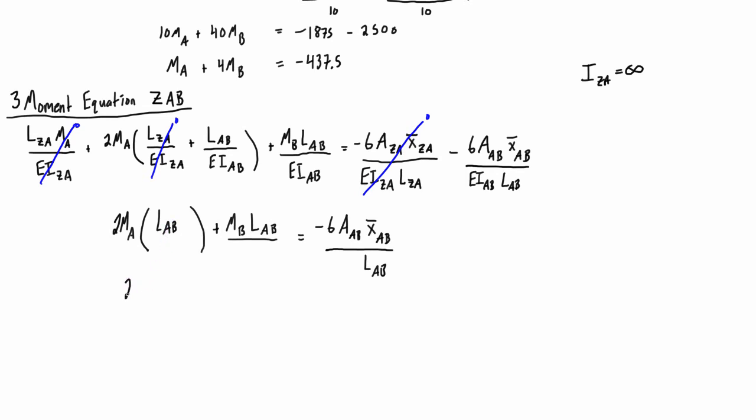So what we can do is we can just fill this in: 2MA times LAB—that was 10—so this is 2MA times 10, plus MB*LAB, so MB times that was also 10, and this was negative 6 times 625 times 5 over 10. And if we simplify this, we get: we have 20MA plus 10MB.